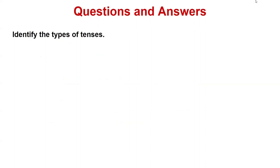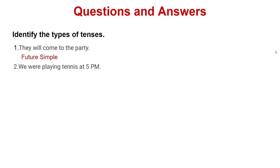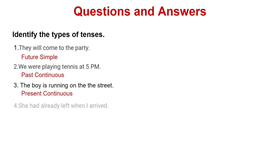Now here is a small quiz to check how much you understood from this video. Identify the types of tenses. First sentence: 'They will come to the party' — what tense is this? Future simple. Next sentence: 'We were playing tennis at 5 pm' — note that W-E-R-E is pronounced 'were.' This sentence is in past continuous.